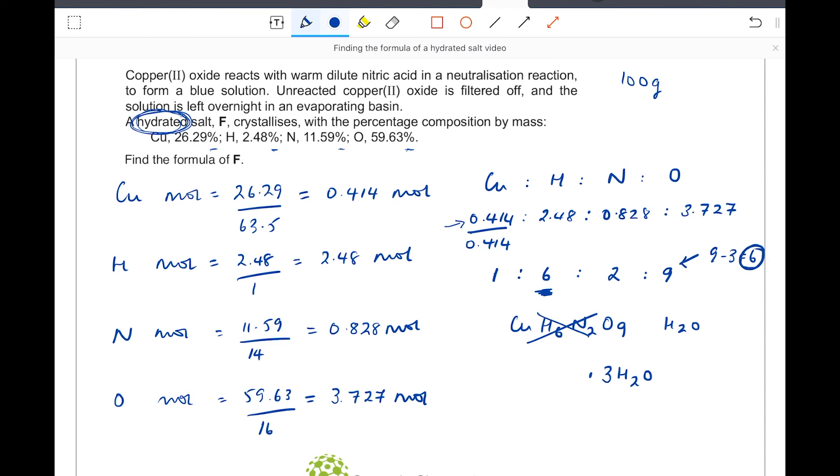So six of those oxygens must be part of the nitrate ion. So I can see straight away that I've got two nitrate ions, okay? So we've got two nitrogens and we have got six oxygens, two lots of NO3.